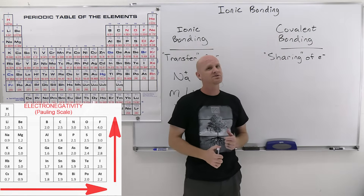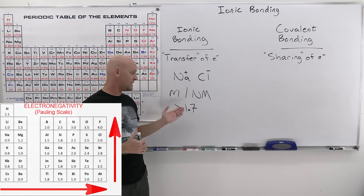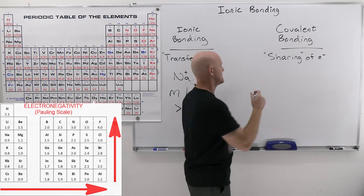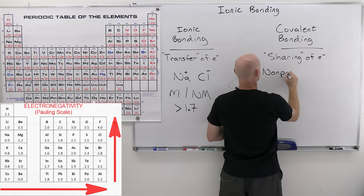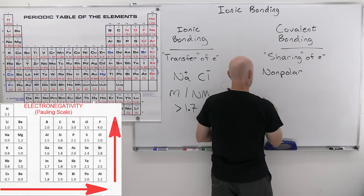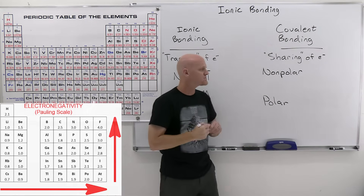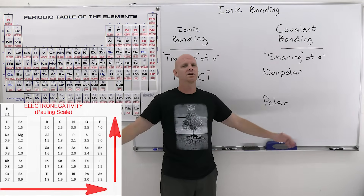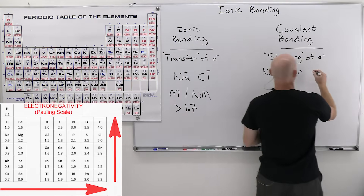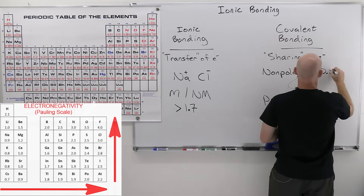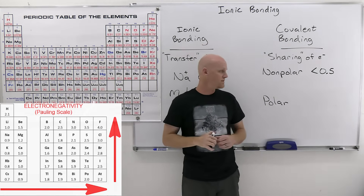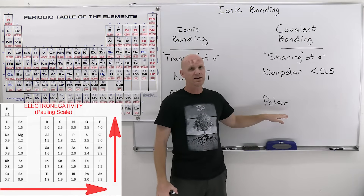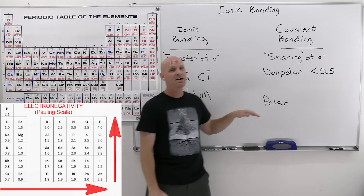On the covalent side, anything less than 1.7 is considered covalent, but it's broken into two categories: non-polar covalent and polar covalent. Non-polar covalent — sometimes called pure covalent — involves fairly equal sharing and occurs when the electronegativity difference is less than 0.5. Polar covalent bonds then range from 0.5 up to 1.7, because once you go past 1.7, it's ionic.